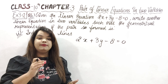Next, let's move to the third part. The first equation again is 2x plus 3y minus 8 is equal to 0, meaning a is 2, b is 3, and c is minus 8. Now we need to make another equation such that our geometrical representation gives coincident lines. For coincident lines: a1 upon a2 is equal to b1 upon b2 is equal to c1 upon c2 — all three are equal to each other.